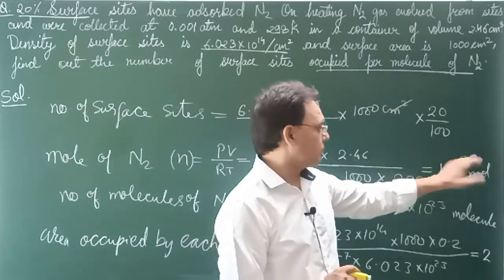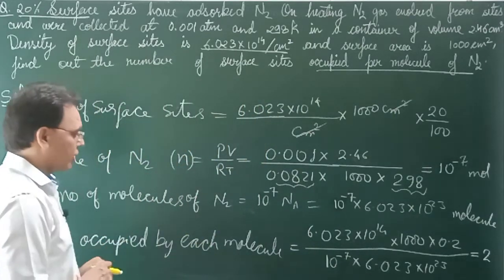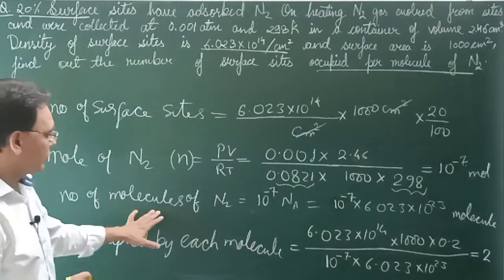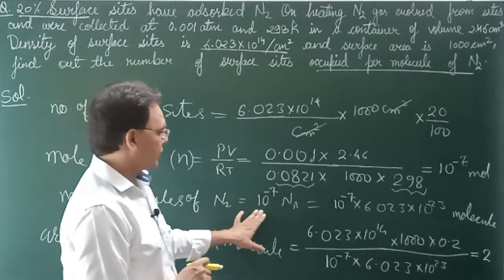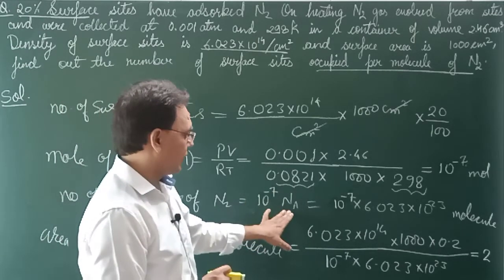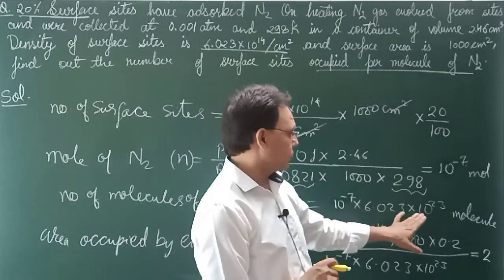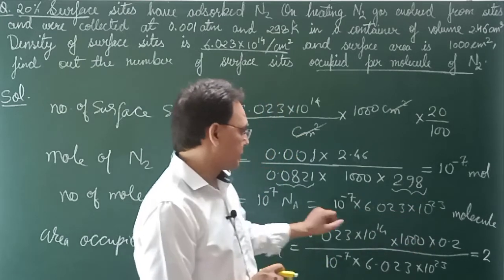This value becomes 10 to the power minus 7 mol. We've calculated moles now. So number of molecules of N2 is: we write 10 to the power minus 7 times NA, where NA value is 6.023×10²³. This is the number of molecules.